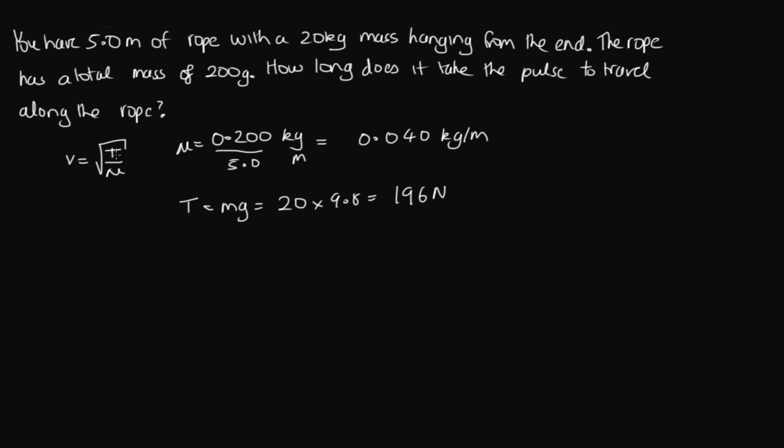Okay, so now we've got our tension and our mass per unit length. So we can solve to get our speed. So we've got 196 divided by 0.040. We enter this into the calculator, and we end up with 70 meters per second. So now we know how fast this pulse is traveling.